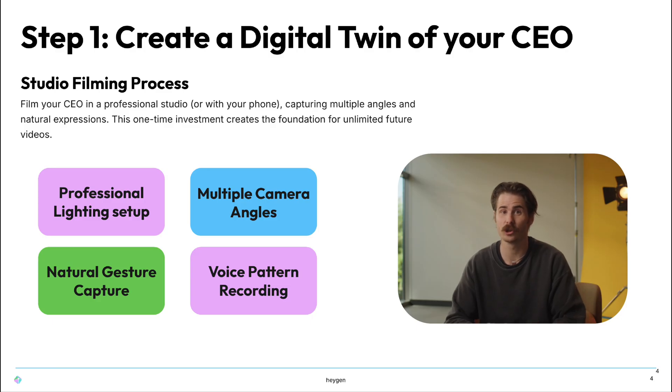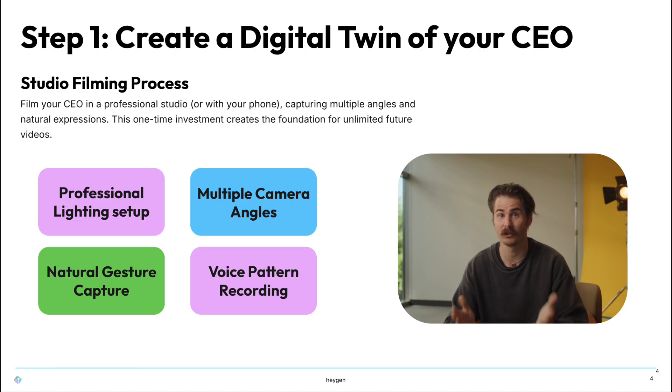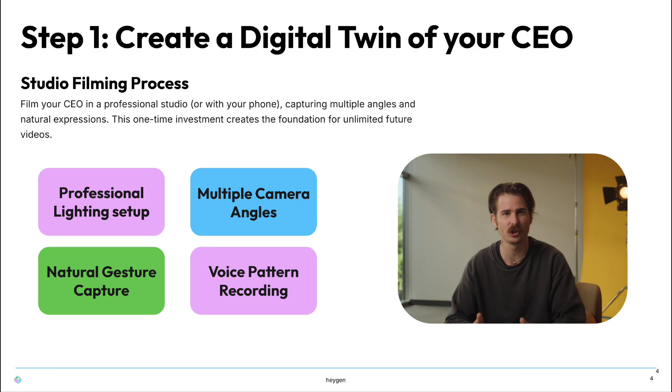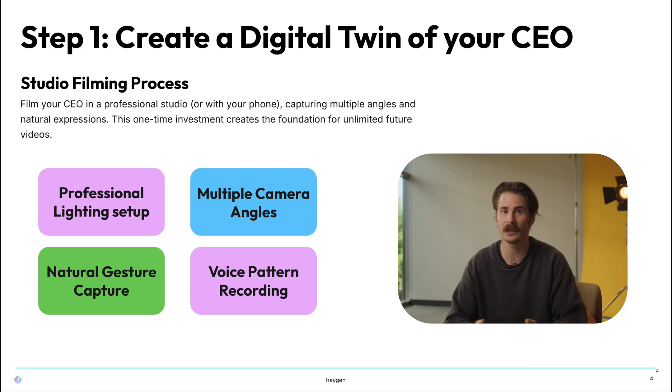Step one: create a digital twin of your CEO. This is the most important step. You want to record your CEO in a studio, much like this behind me. Film with professional lighting and use professional mics to capture clean audio. The key to creating the best digital twin is using natural gestures, authentic facial expressions, and a relaxed delivery. You only need about two minutes of clean footage to build a digital twin. If you have time, record five or six different looks with different outfits or backgrounds — that way you'll have multiple reusable setups for future videos.